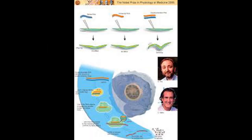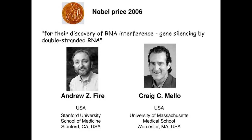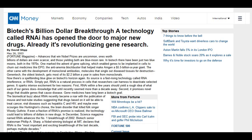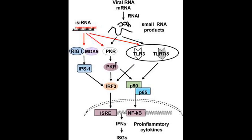In 1993, Andrew Fire and Craig Mello postulated the mechanism of RNA interference by introducing exogenous double-stranded RNA into Caenorhabditis elegans (C. elegans). Both were awarded the Nobel Prize in Medicine in 2006. In 2013, Fortune magazine announced the discovery of RNAi as biotech's billion-dollar breakthrough.